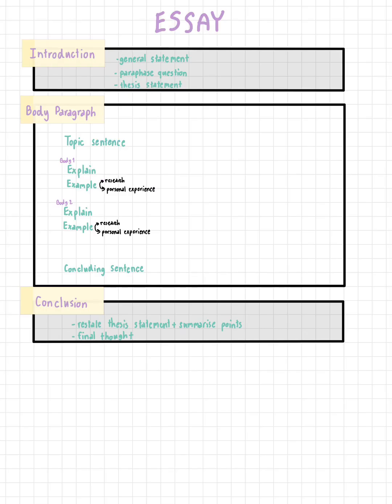First, I am going to show you the structure of an IELTS Task 2 essay. We need 4 paragraphs. The first is the introduction, which needs a general statement, a paraphrased question, and a thesis statement. Next are two body paragraphs — each with a topic sentence, explanation, example, and a concluding sentence. The examples can be from research, studies, or even your own experience. Lastly, the conclusion paragraph needs to restate the thesis statement and summarize points with a final thought.